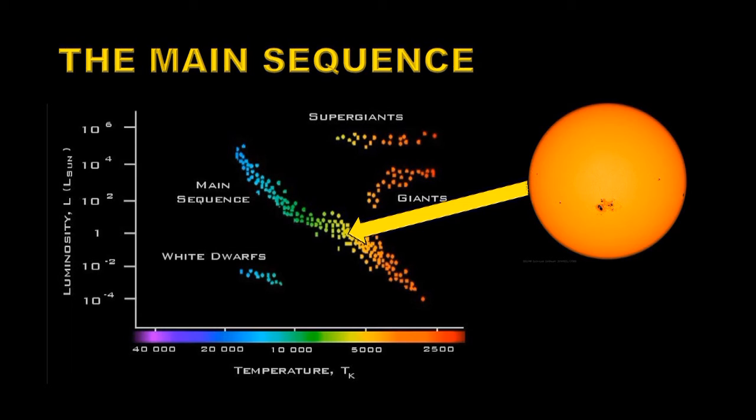The sun is a pretty average star, laying in about the middle of the main sequence. It has a surface temperature of about 5700 degrees Kelvin, and the luminosities here are measured with respect to the sun, so by definition it's going to be a luminosity of 1. But you can have stars that are a million times more luminous or 10,000 times less luminous than the sun.